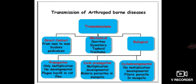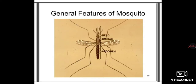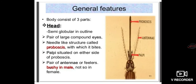The general features of mosquitoes: all arthropods are segmented and muscle-based. Mosquitoes are divided into three parts - head, thorax, and abdomen. The head is further divided into three parts: proboscis, antennae, and palps.